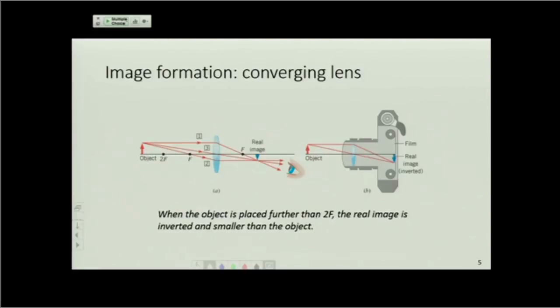So when the object distance is exactly twice the focal length, we found in that example that the image distance is also twice the focal length, but it is a real image, so it's inverted, which means the magnification is negative and has a magnitude of 1, because these two are equal.